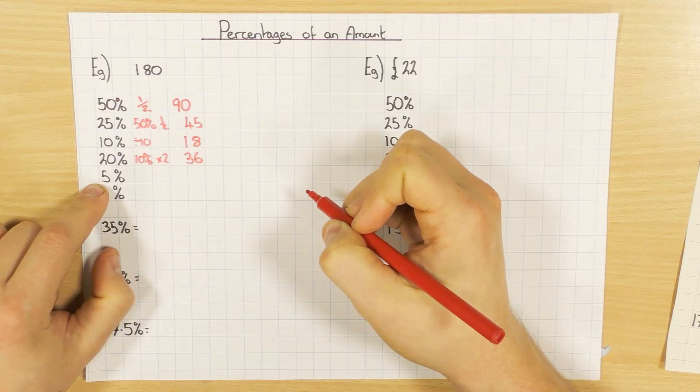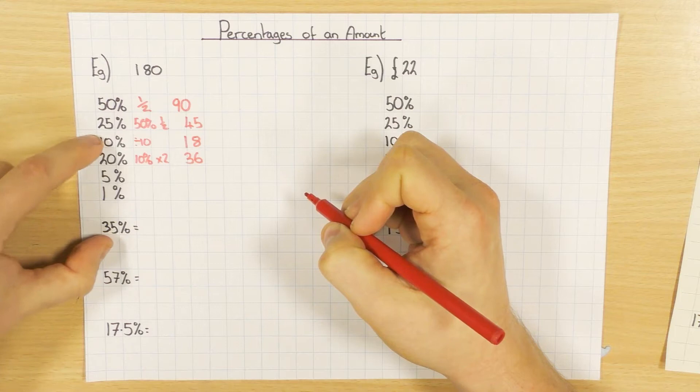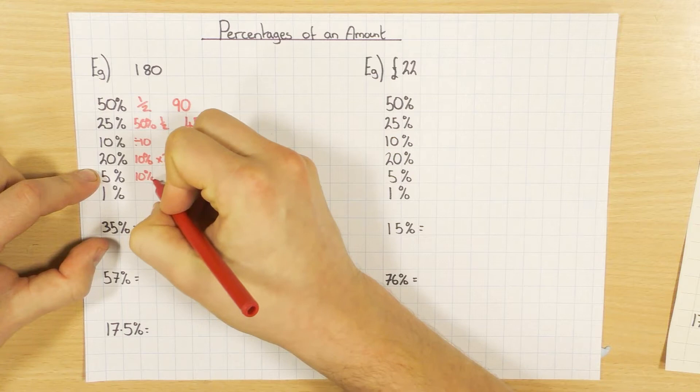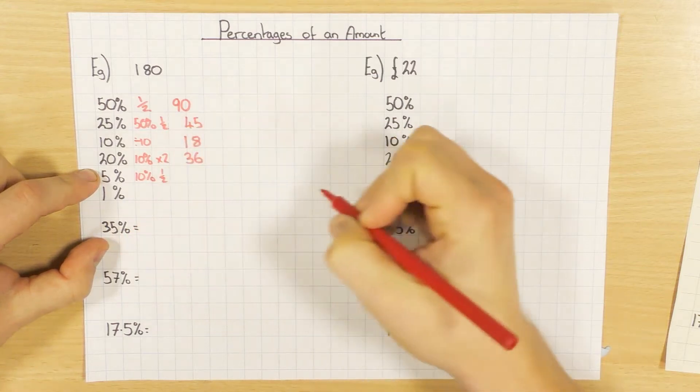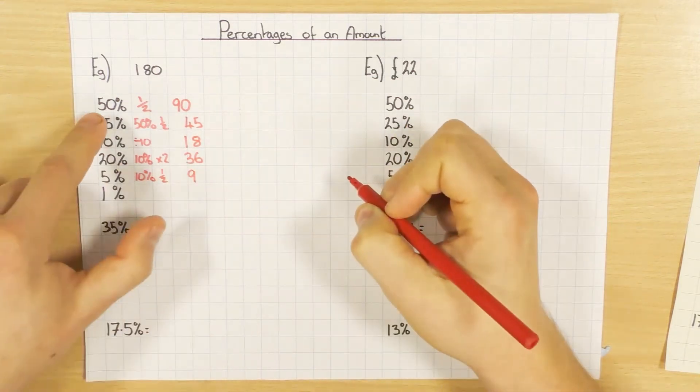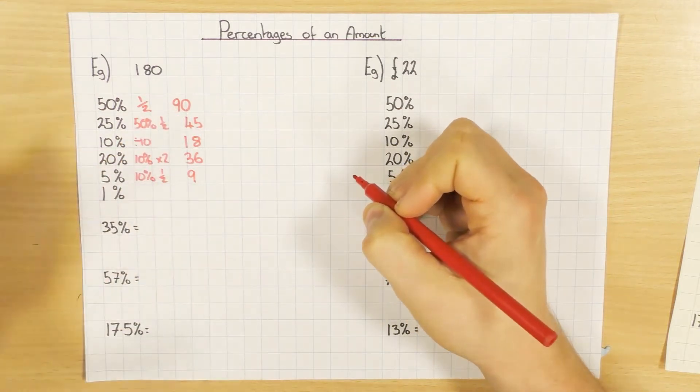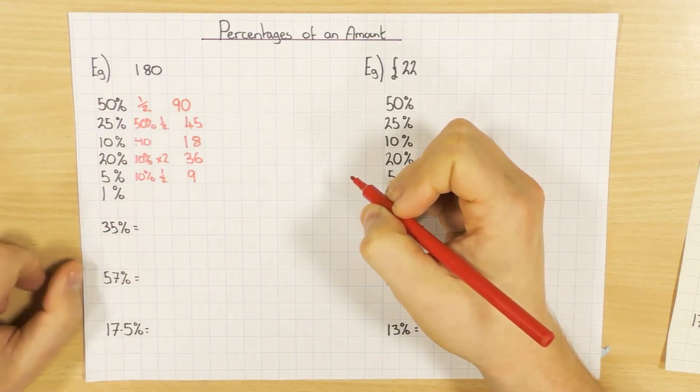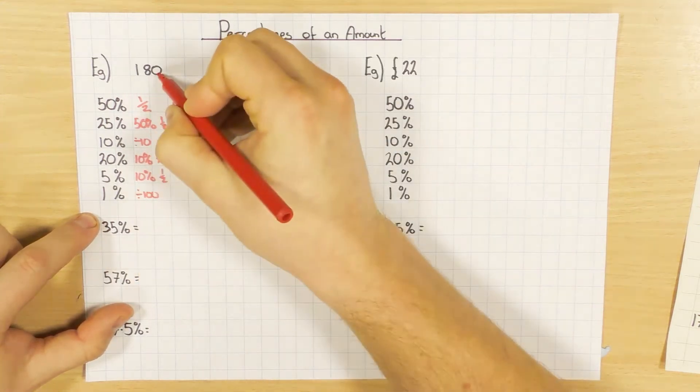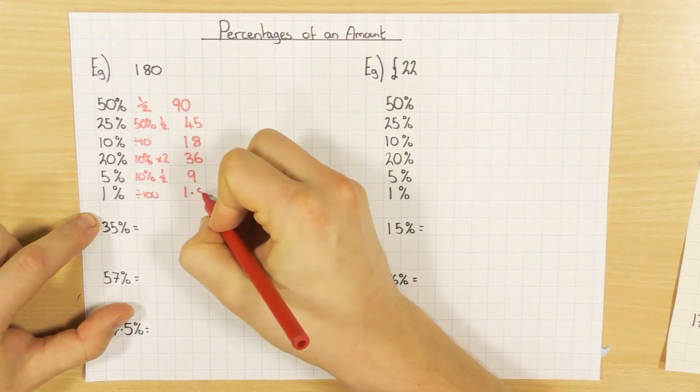To find 5%, a couple of different ways you can do it. You can find 50% and divide it by 10, or find 10% and half it. I'm just going to go with 10% and half it. So if 10% was 18, half of that would be 9. And the final one, to find 1%, we divide by 100. So 180 divided by 100, decimal point moves back twice, 1.8.